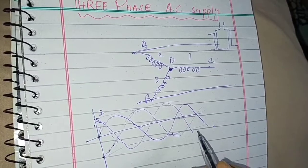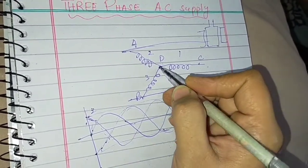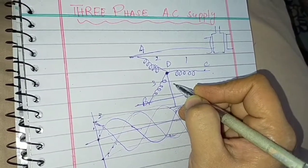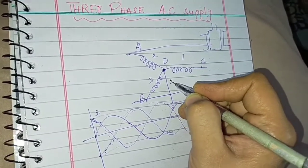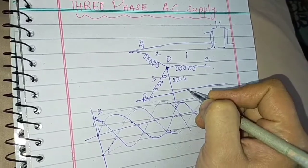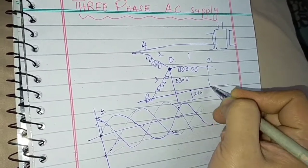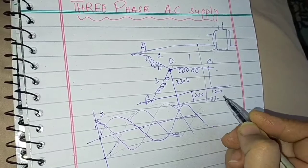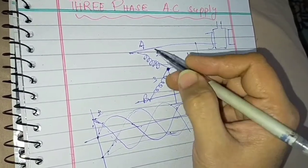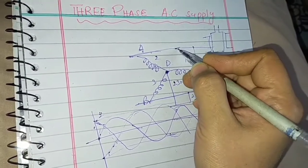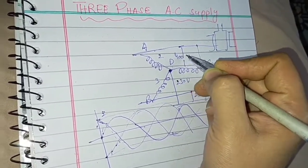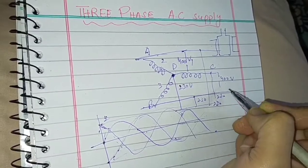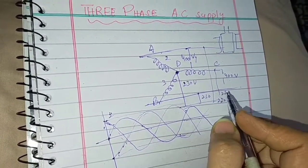This is our three-phase AC supply. If we look at each terminal to ground, the potential difference is 230 volts. D to ground is 230 volts, B to ground is 230 volts, and A to ground is also 230 volts. However, the potential difference between any two terminals will be 400 volts. For example, D and A — the potential difference will be 400 volts. C and B — the potential difference will also be 400 volts.